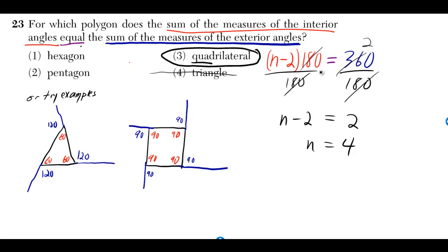To solve it though you just divide both sides by 180, so that way the 180 cancels and you're just left with the n minus 2, and 360 divided by 180 is 2. Then you add 2 to both sides and you get n is equal to 4.